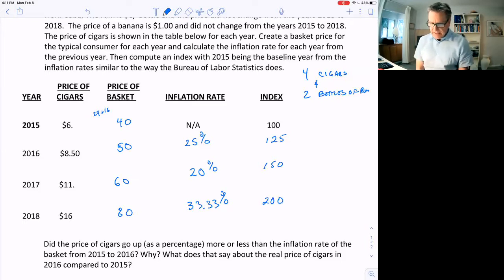And you see the price of the basket has gone from 40 to 80 over four years. That means the index should double too. The growth rate of that basket price is the inflation rate, and it's also the growth rate of the index.